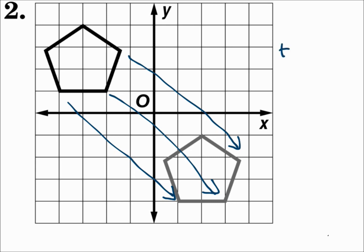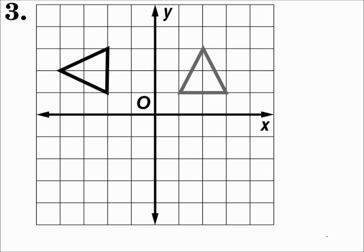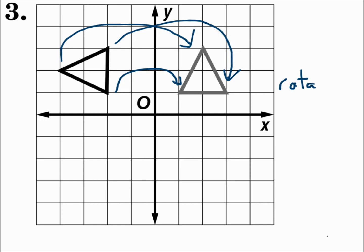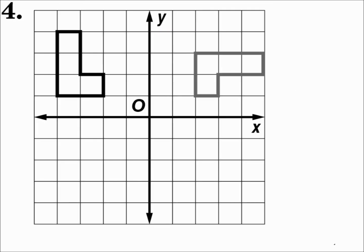When it slides like that, it's called a translation. Number three: this triangle rolls around — it's turning. The size and shape still don't change, but it is turning around. That's a rotation. Number four: this figure, when it moves over, turns around. Any time it turns around — in this case clockwise — it's a rotation.